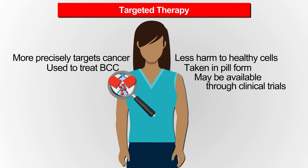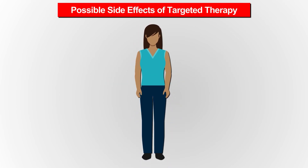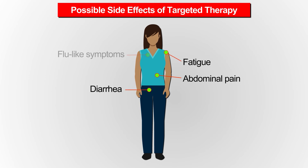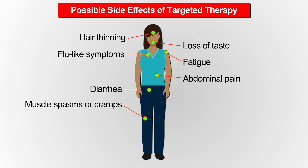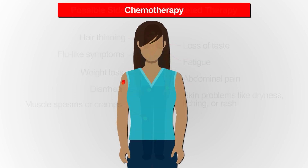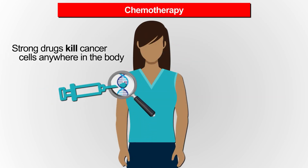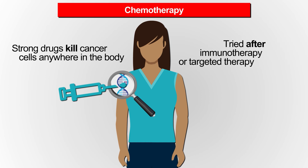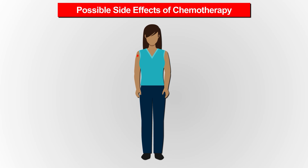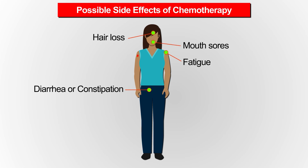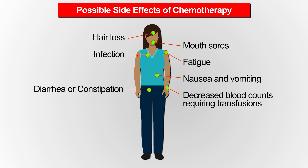Possible side effects of targeted therapy include abdominal pain, diarrhea, fatigue, flu-like symptoms, hair thinning, loss of taste, muscle spasms or cramps, skin problems like dryness, itching or rash, and weight loss. Chemotherapy uses strong drugs to kill cancer cells anywhere in your body, and may be tried after immunotherapy or targeted therapy stops working. Possible side effects include diarrhea or constipation, fatigue, hair loss, mouth sores, nausea and vomiting, increased risk of infection, and possible need for blood transfusions due to decreased blood counts.